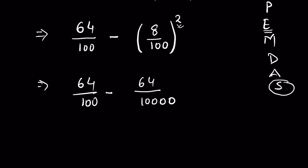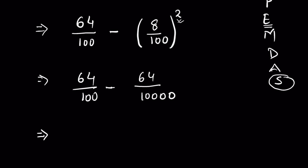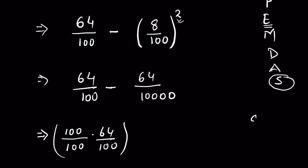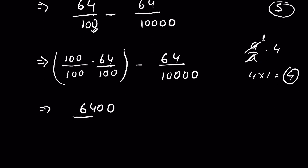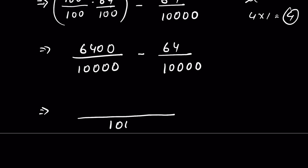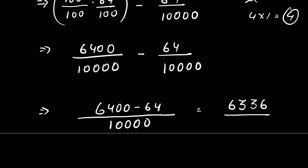Now we have fractions to subtract, and to subtract fractions we need a common denominator. We multiply and divide 64 upon 100 by 100 upon 100 — this doesn't change the fraction, since multiplying and dividing by the same number is like multiplying by 1. So it becomes 6,400 upon 10,000 minus 64 upon 10,000. Now with a common denominator, we subtract: 6,400 minus 64 equals 6,336 upon 10,000.